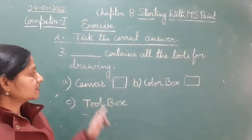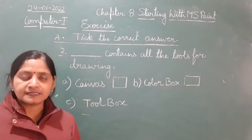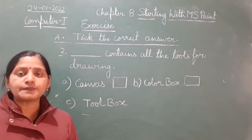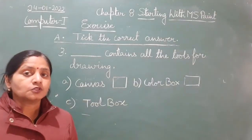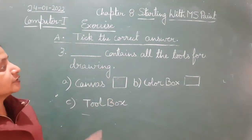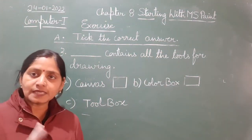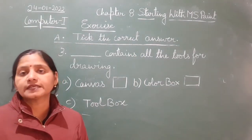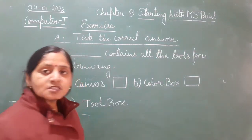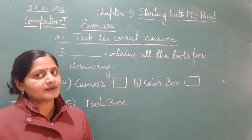Let us look at the options. Canvas means it is a kind of cloth used for making drawings or embroidery; it also refers to thick cloth used to make tents. This has no connection with the paint program, so it is not the correct answer. As I told you in the previous question, in MS Paint there are two types of boxes: one is the color box and the other is the tool box.